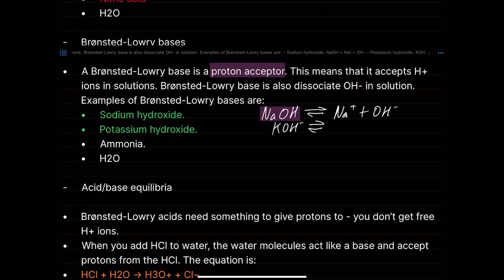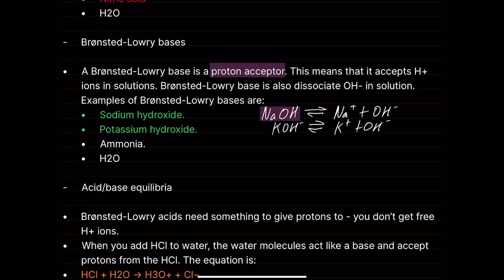Potassium hydroxide is also a strong base. The OH− ion is very good at accepting a proton. The stronger the base, the more likely it is to dissociate into K+ and OH−. The more OH− that's present because it's a strong base and fully dissociates, the more easily it will accept a proton.